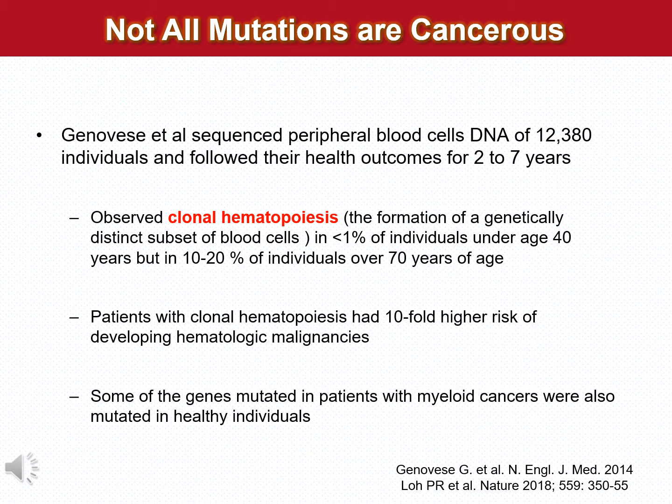The importance of clonal hematopoiesis in the detection of cancer by using circulating DNA is that identified mutations in the circulating DNA may be indicative of clonal hematopoiesis and not the presence of cancer at another site. This finding reduces the specificity of the cancer test using circulating free DNA and compromises its positive predictive value.